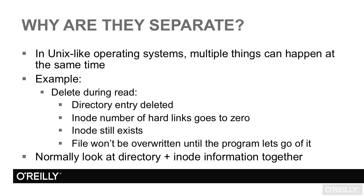Unix and Unix-like operating systems were designed to be multitasking, that is to have multiple things happening at once. Suppose program A is reading a file, and program B, running at the same time, deletes the file. What happens? The directory entry gets deleted and the inode table is updated, so the number of hard links to that inode is zero. But the program can go on reading the file as usual, because it has the inode of the file. The inode still exists, and the file won't be overwritten until program A lets go of it. Normally, we'll look at directory and inode information together.